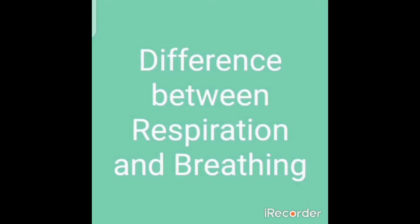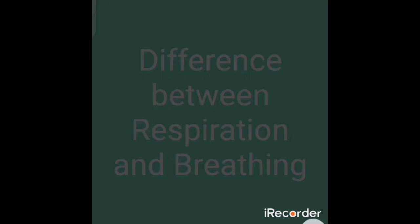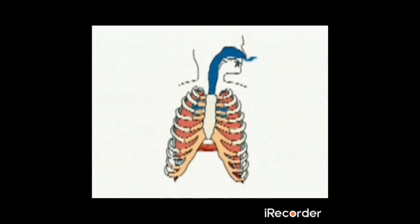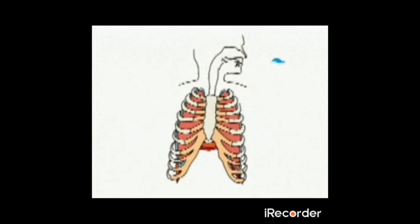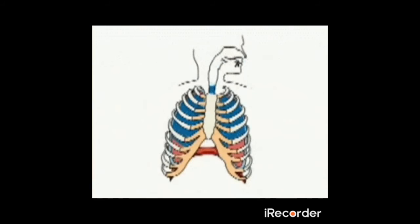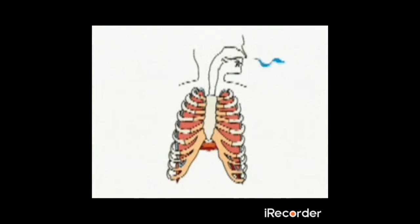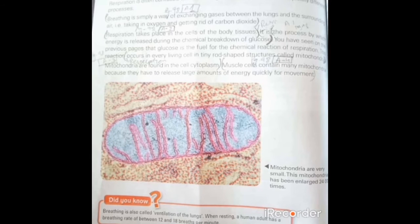Now we will talk about the difference between respiration and breathing. In breathing, air — that is, oxygen — is taken inside the lungs, and carbon dioxide is exhaled out. When we inhale, the lungs increase in size, and then they collapse and carbon dioxide is given out. Respiration takes place in all parts of the body. In the cells there is mitochondria, in which glucose is broken down to produce energy. Mitochondria is the part of the cell in which respiration takes place, and it produces energy for the whole cell.